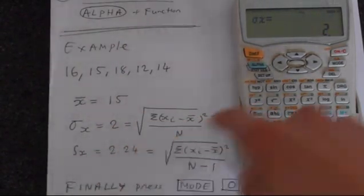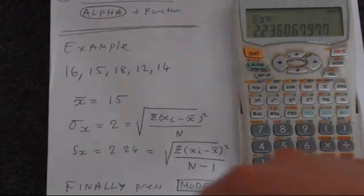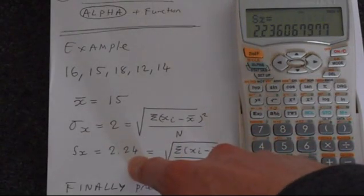And then we want sx, so just alpha. Then this is on the number 5. Equals, we get 2.236, which is 2.24 when you're rounded.